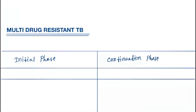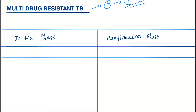Multidrug resistant TB (MDR-TB) shows resistance to H plus R — that is, isoniazid and rifampicin. In the treatment, the initial phase is continued for six months, and the continuation phase is for 18 to 24 months.